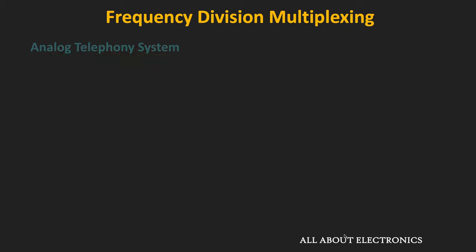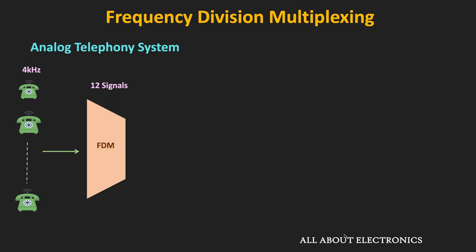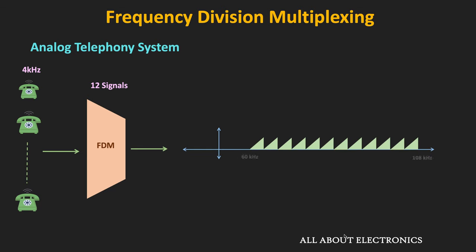Analog telephony is one example where single sideband modulation is used during multiplexing. Typically, the voice signal contains information from 300 Hz to 3500 Hz, and including some guard band, each voice signal is assigned a bandwidth of 4 kHz in this telephony system. In the first level of multiplexing, 12 such voice signals are multiplexed. This multiplexed signal occupies the band from 60 kHz to 108 kHz, occupying a total bandwidth of 48 kHz. The carrier frequency of each voice signal is 4 kHz apart from each other, and this multiplexed signal is called the group.